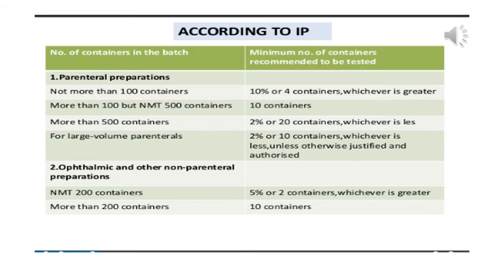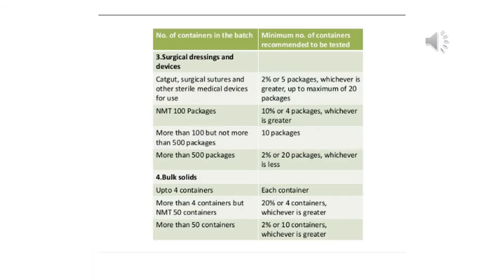For an ophthalmic preparation: if you have not more than 200 containers, you are going to select 5% or 2 containers, whichever is greater. Likewise, there is selection of number of containers for surgical dressings and devices and even for bulk solids. This selection is according to IP.